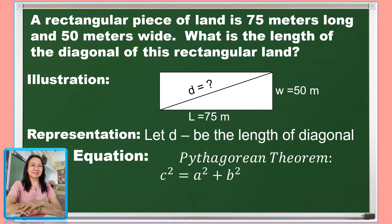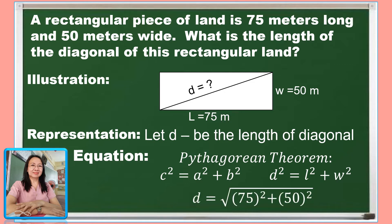In symbol, C squared equals A squared plus B squared. Using the parts of the rectangle, let us substitute D as the hypotenuse, L for the base, and W for the altitude. So D squared equals L squared plus W squared. To find D, we take the square root of both sides and substitute the given: D equals the square root of 75 squared plus 50 squared.